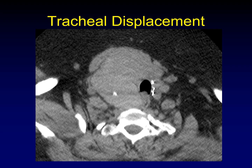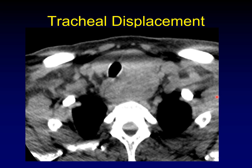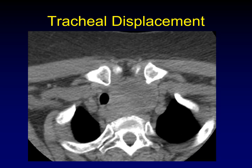We'll do the same thing for tracheal displacement, categorizing it as mild, moderate, or severe. Mild displacement is just a little bit off midline, still in front of the vertebral column. Moderate displacement is a larger mass, sort of off the edge of the vertebral column. We measure tracheal displacement right at the thoracic inlet, right where the manubrium sterni starts. Severe tracheal displacement means we're way off to the side — behind the clavicle — and you can see there's probably some stretch on the trachea at that point.